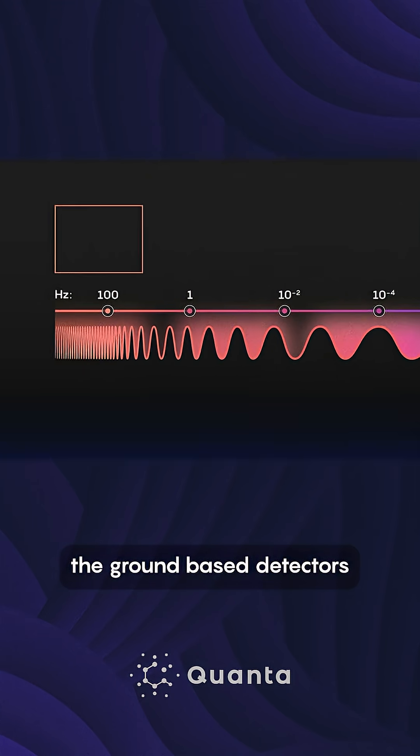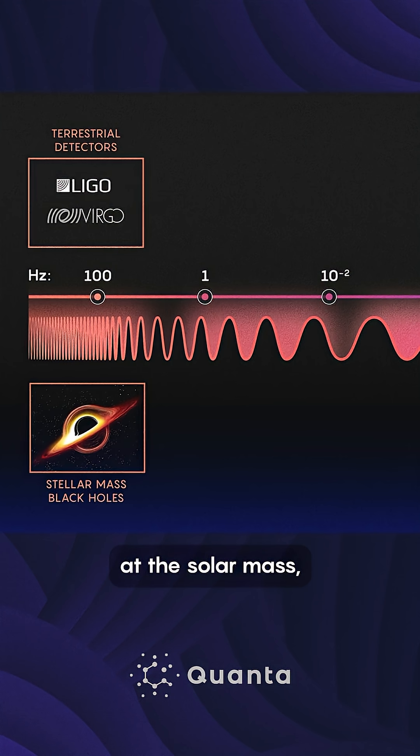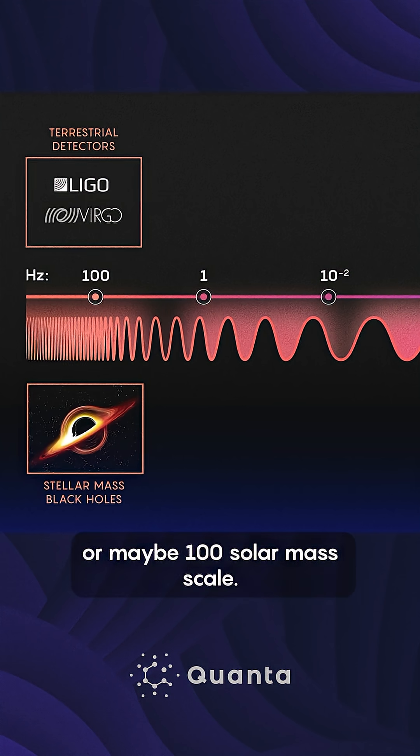So at higher frequencies, the ground-based detectors like LIGO are doing a great job of measuring black holes at the solar mass, or maybe 100 solar mass scale.